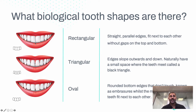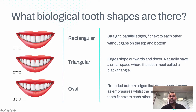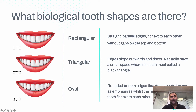Triangular teeth are literally triangles — the edges slope outwards and down, and they naturally have a space between the teeth where they meet, called a black triangle. The third type is oval-shaped teeth, which are rounded at the edge, and naturally have little spaces at the bottom called embrasures. These are all natural tooth shapes.